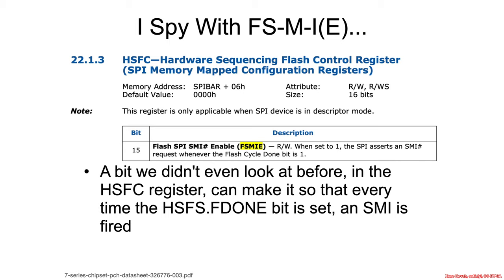FSMIE is a bit found in the hardware sequencing flash control register at bit 15. It is read-write, and when set to one, the SPI asserts an SMI whenever the flash cycle done bit is one.